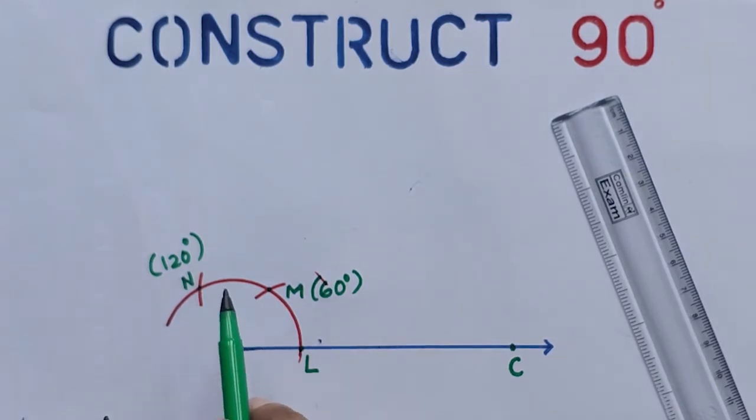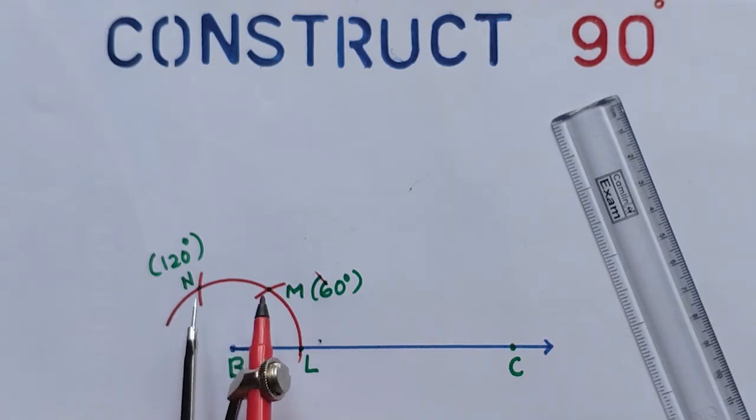And we know that 90 comes in between 60 and 120. Moreover, this 60 if we bisect, we will get 30, and 60 plus 30 is 90 degrees. That means we have to bisect the second part, that means this part we have to bisect.